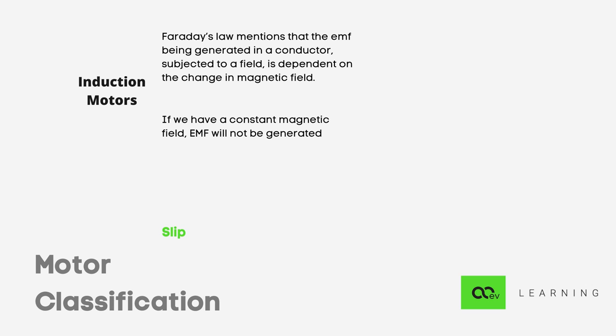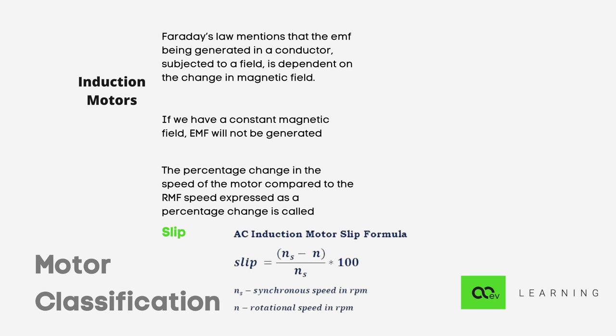It is theoretically impossible to achieve the same speed as that of the RMF. The percentage change in the speed of the motor compared to the RMF speed expressed as a percentage is called a slip. Thus, the rotor and the RMF are in a constant cat and mouse chase, and Jerry always wins here as well.